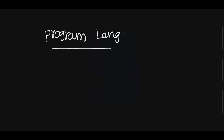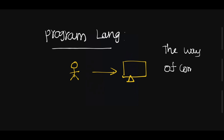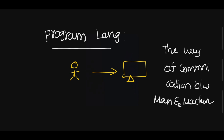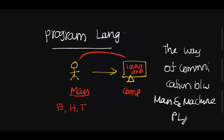What is a programming language? A programming language is the way of communication between a person and a machine. Basically, a person can understand English and Telugu, while a computer or device can understand only zeros and ones. So if a person wants to communicate using zeros and ones, it is very difficult. That is why we need some kind of programming language to communicate with the computer.